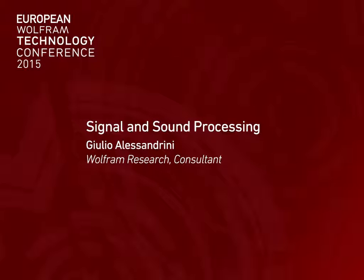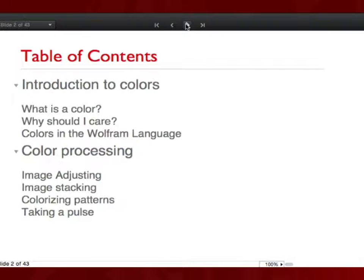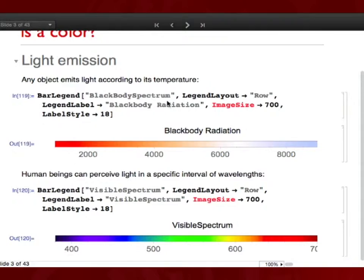I'll try to be brief in the introductory part, but it's worth mentioning what colors are, why you should care, and the internals of color representation in Mathematica. Many of you from physics will know what a black body is — every object at a given temperature emits electromagnetic radiation. We don't see the whole electromagnetic spectrum; we only notice stuff that emits light in a certain interval. The sun is around 3,000 Kelvin, which is why we see sunlight, but with an infrared camera you'd see everybody shining.